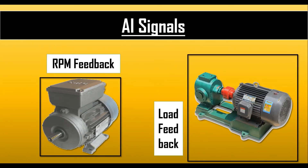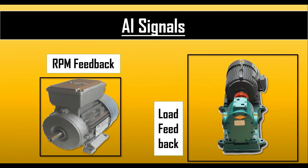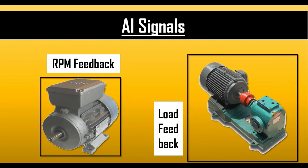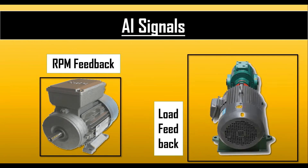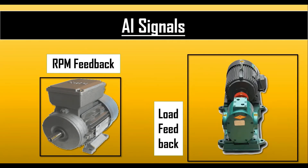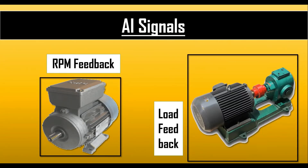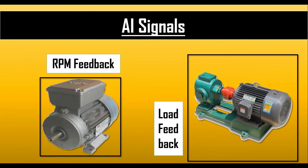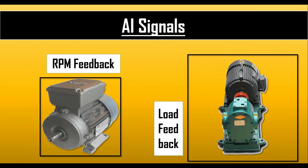Some signals are analog input signals, also known as AI signals. These signals are RPM feedback and load feedback. RPM feedback is the motor speed feedback — when the motor is running at any speed, an AI signal is received. Load feedback shows how much load is on the motor being operated, and that is received as load feedback.